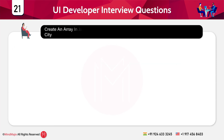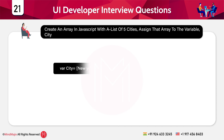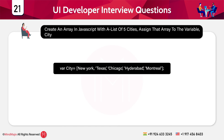The next question is: create an array in JavaScript with a list of five cities and assign it to the variable city. You simply define a variable called city and in square brackets list the names of five cities in single quotes. For example: var city = ['New York', 'London', 'Sydney', 'Hyderabad', 'Montreal'].